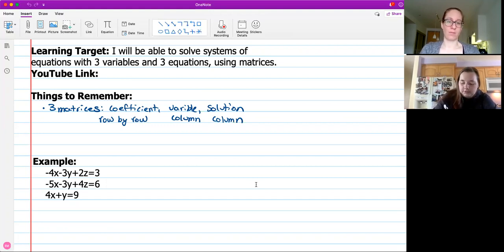The other thing I want to remind you of that's super important is putting a zero in when you have missing variables. As we can see on this third equation here, we don't have a coefficient for z, and so we need to put in a zero where that coefficient would go. Just put zeros in for missing variables.